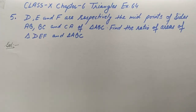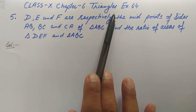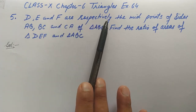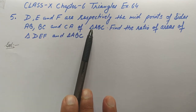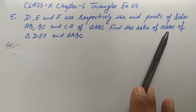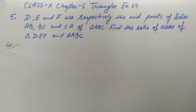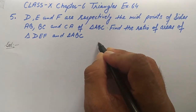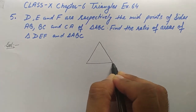Hello dear students, welcome to this YouTube channel. Let's do this question. This question is taken from Class 10, Chapter 6, Triangles, Exercise 6.4, Question 5. D, E, and F are respectively the midpoints of the sides AB, BC, and CA of triangle ABC. In this question, one triangle is given — triangle ABC.